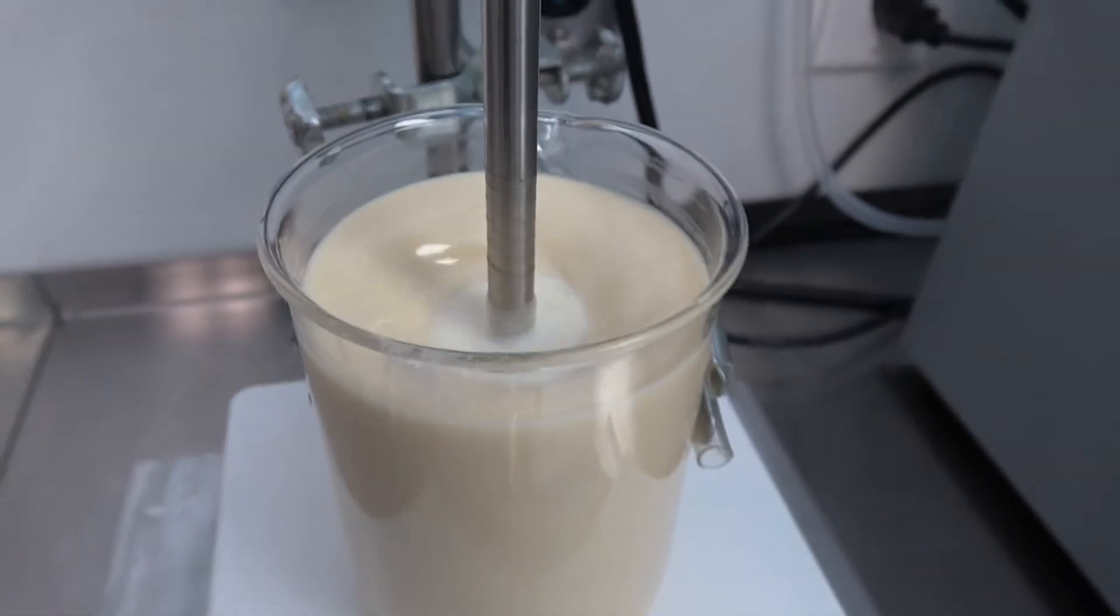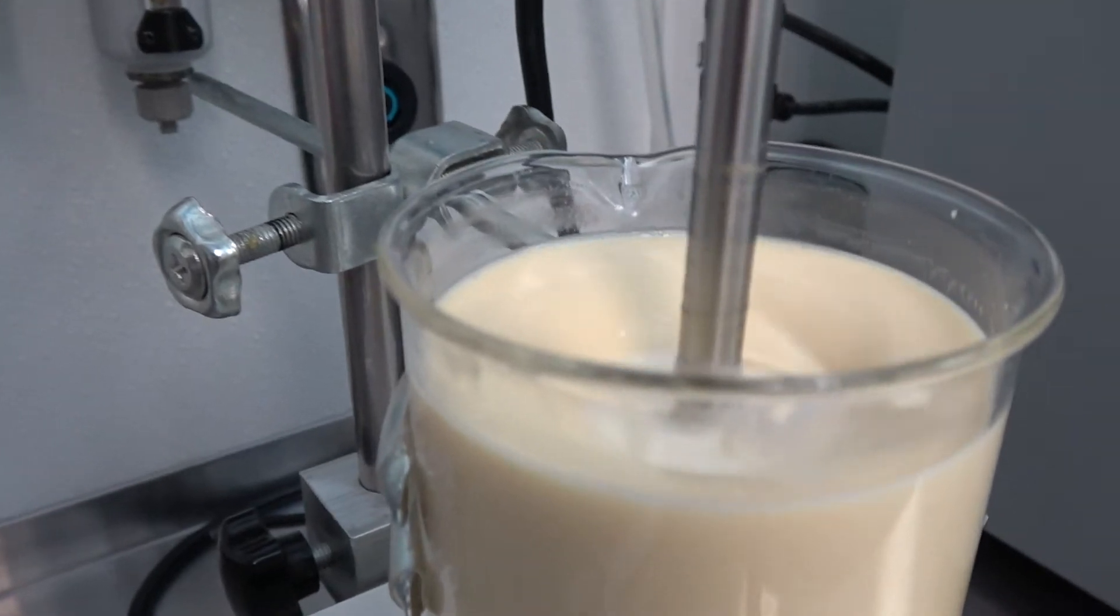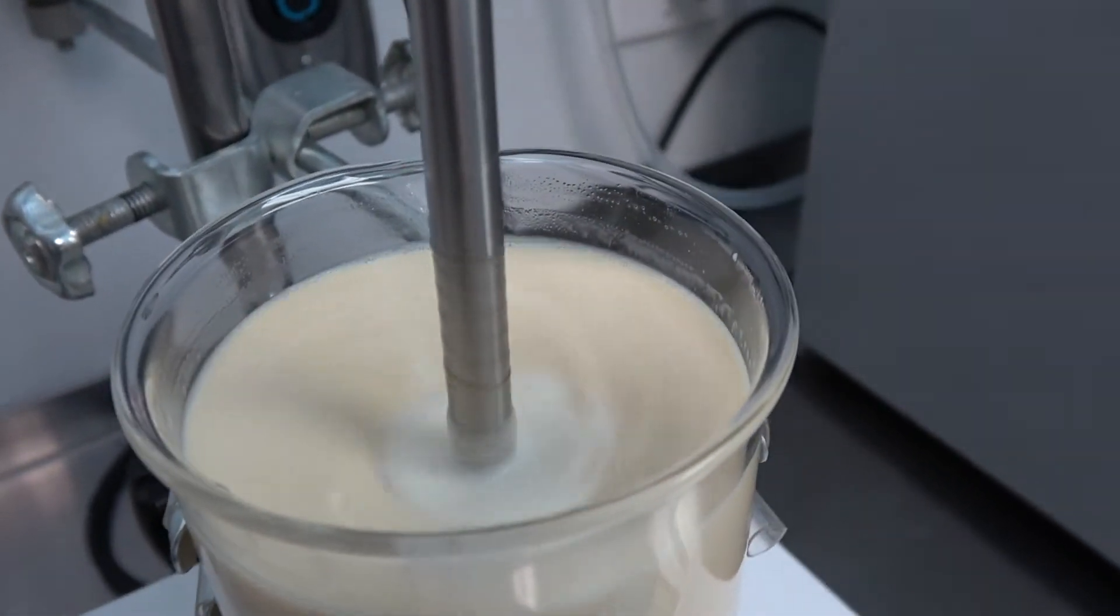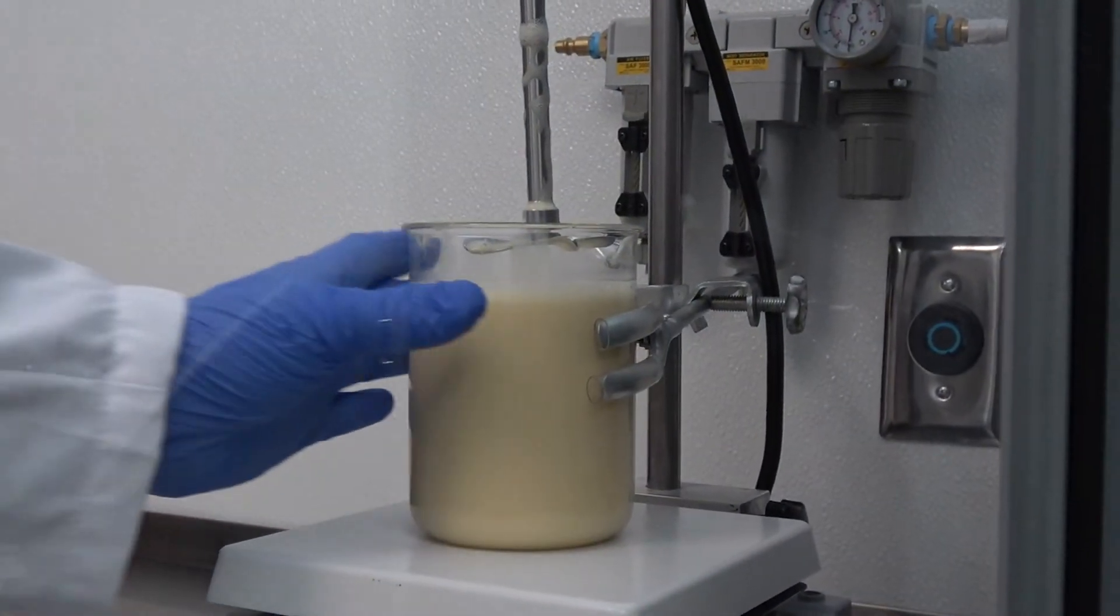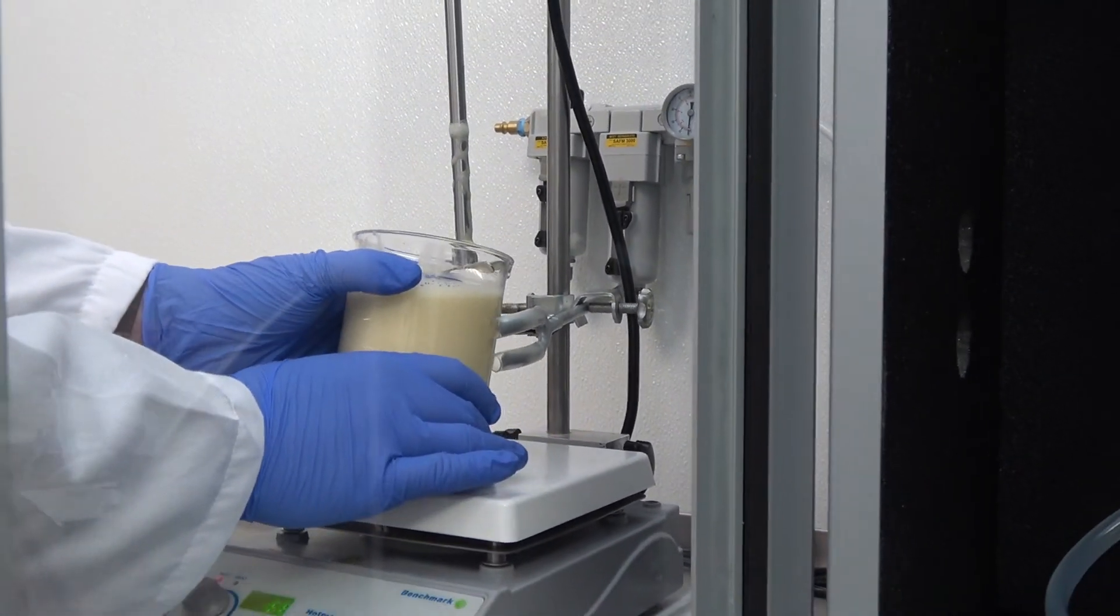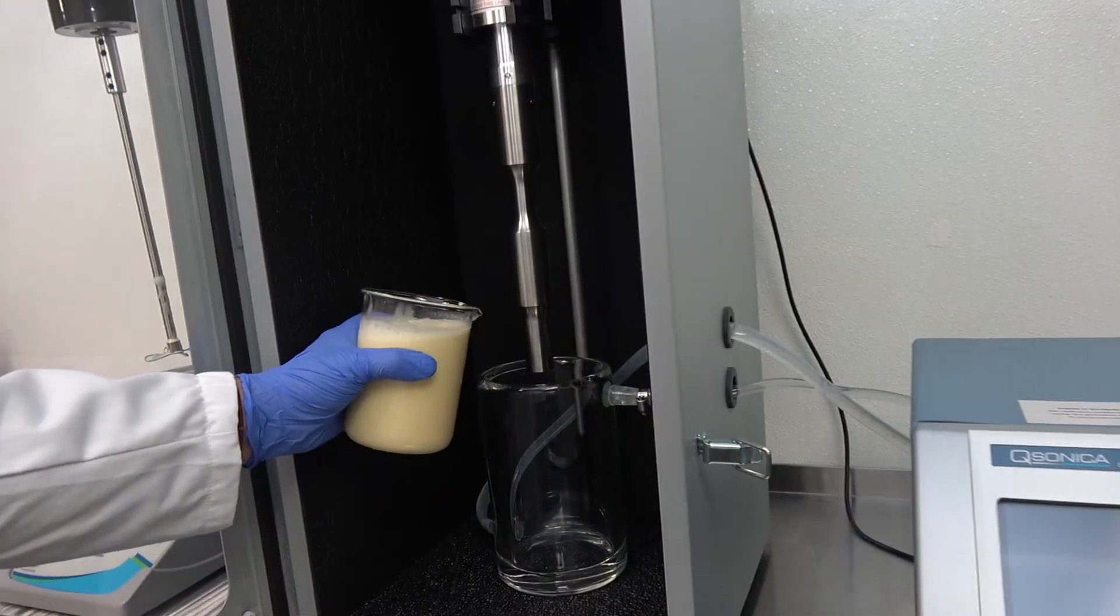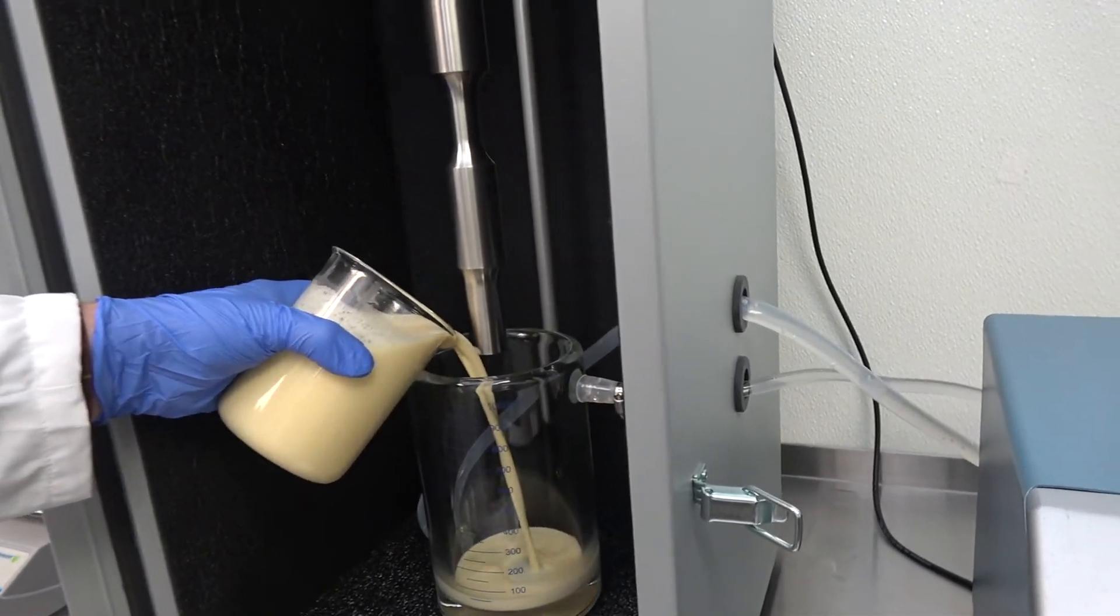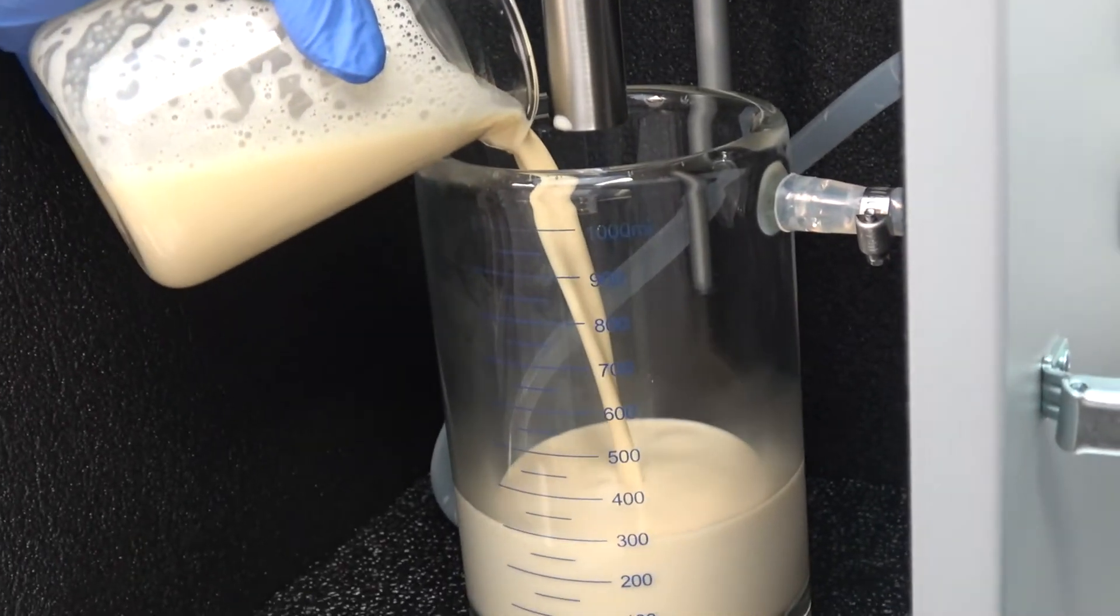And there you have it. You've formed your coarse emulsion and you're now ready to sonicate. Once the material is totally homogeneous, it's time to transfer to the jacketed beaker. Remove the beaker from the hot plate and transfer the contents into the jacketed beaker. Cooling water flowing through the jacketed beaker will allow us to hold the emulsion temperature at 65 degrees Celsius during processing.